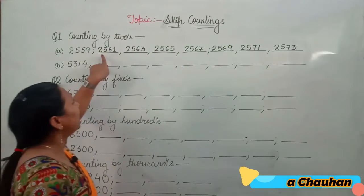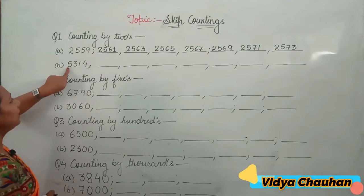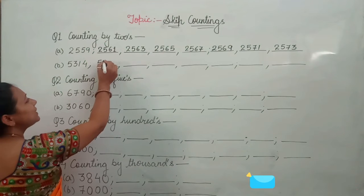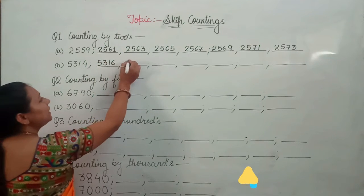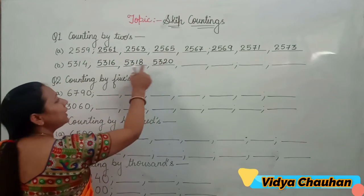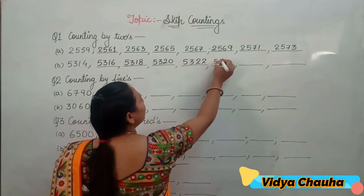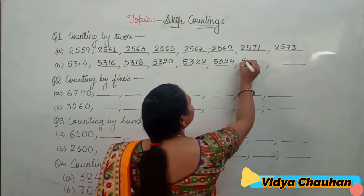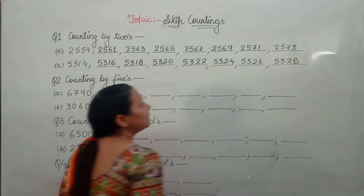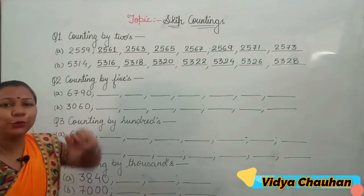This is how you do skip counting by 2 — we basically skip one number in between to get the next number. Similarly, if the number is 5314, then 14 plus 2 is 16, so the sequence is: 5316, 5318, 5320, 5322, 5324, 5326, and 5328. This is how we find any numeral when a starting value is given using skip counting by 2.